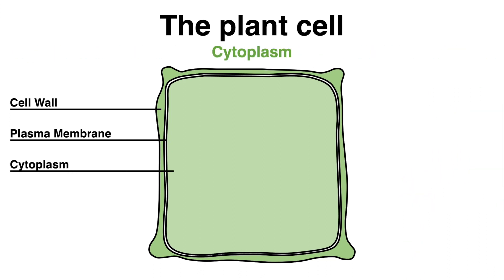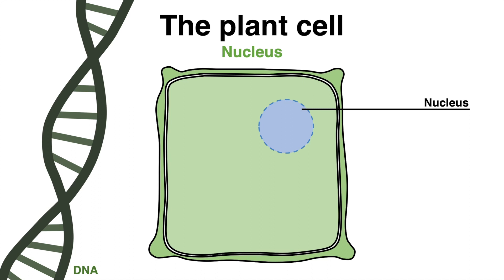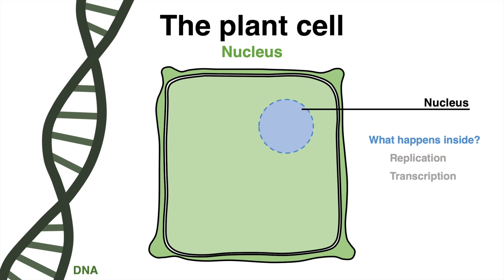Inside the plasma membrane lies the cytoplasm, described as the totality of both the cytosol — a liquid containing the nutrients — the cytoskeleton, and the organelles of a cell. Among these, the nucleus might be one of the most well-known cell compartments. The nucleus stores the majority of the genetic information packed in DNA, and important processes take place within it: replication to duplicate DNA and transcription to generate RNA.